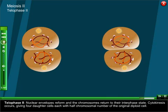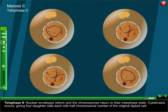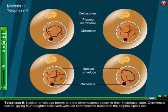Telophase two: Nuclear envelopes reform and the chromosomes return to their interphase state. Cytokinesis occurs giving four daughter cells each with half chromosomal number of the original diploid cell.